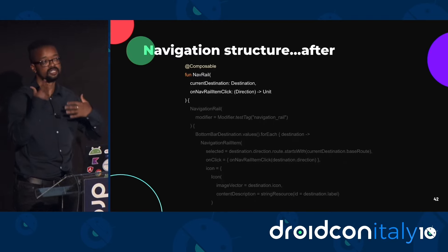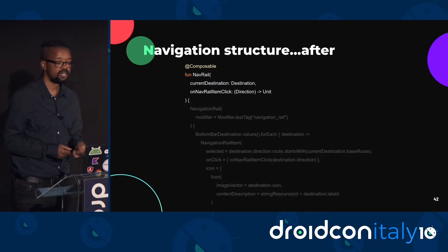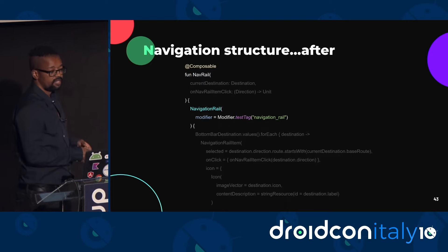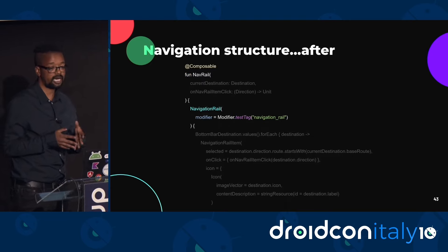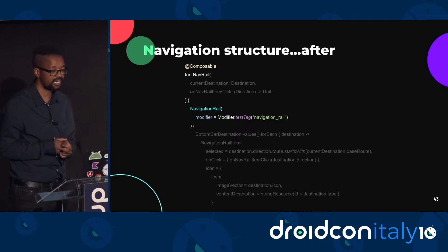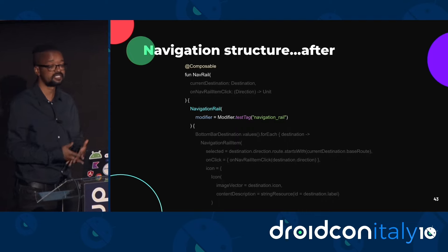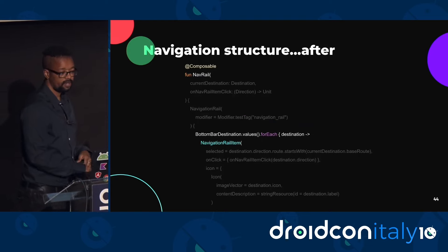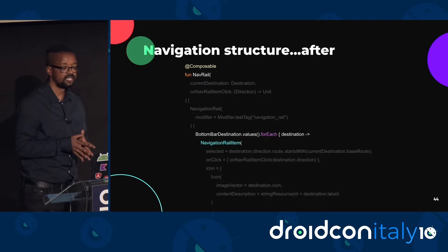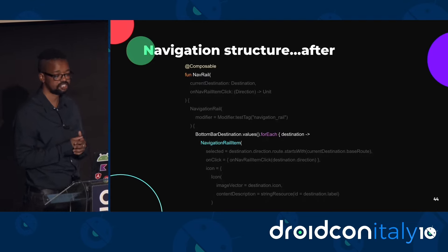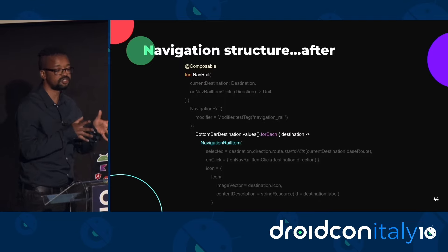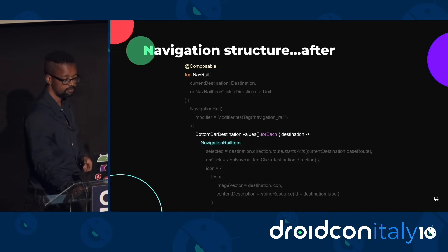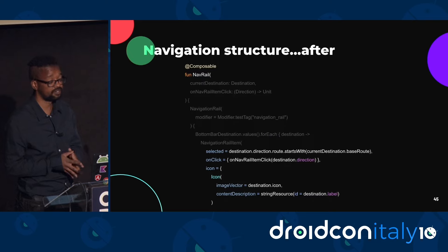My nav rail composable takes two parameters: the current destination the user is on, and a lambda function called onNavRailItemClick, which will be called when a menu item is clicked. In setting up the material nav rail composable, I passed a modifier attribute called testTag — this allows me to target this specific composable when writing tests. To set up the items for the navigation rail, I used my enum class called BottomBarDestinations, which contains all the navigation menu items, creating a navigation rail item for each.